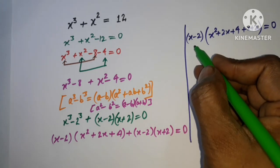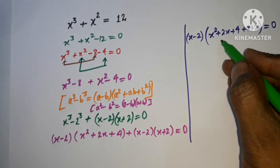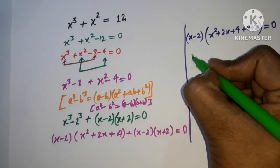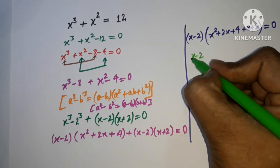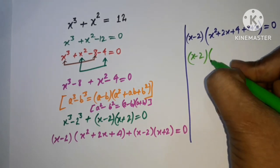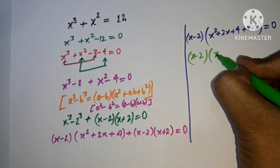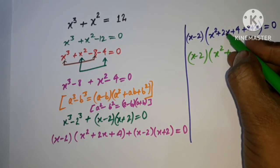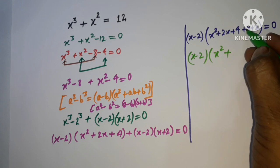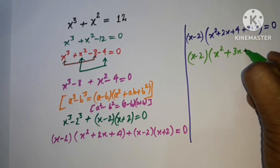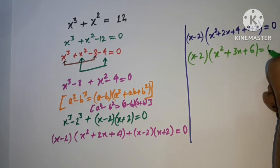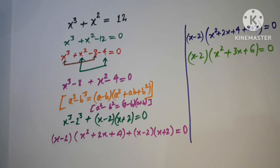Now we simplify the bracket: combining x² terms, 2x + x = 3x, and 4 + 2 = 6, giving us: (x - 2)(x² + 3x + 6) = 0.